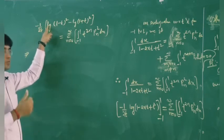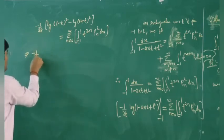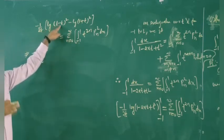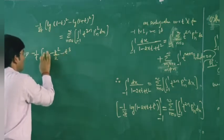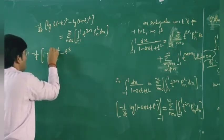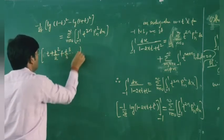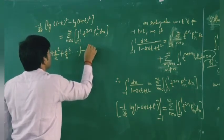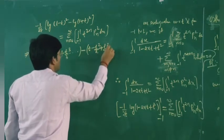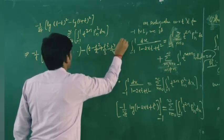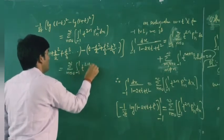Taking the power of 2 outside using log(m^n) = n·log(m), the 2s cancel, giving (-1/t) times [log(1 - t) - log(1 + t)]. Expanding: log(1 - t) = -(t + t²/2 + t³/3 + ...) and log(1 + t) = t - t²/2 + t³/3 - t⁴/4 + .... This is the left-hand side, equalling the summation from n = 0 to infinity of t^(2n) times the integral from minus 1 to 1 of P_n² dx.